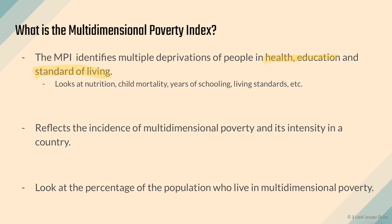It looks at factors such as nutrition, child mortality, years of schooling, living standards, and more. We'll look at exactly what proportion the different factors make up of this index later on. Essentially, it reflects the incidence of multi-dimensional poverty and its intensity in a country.